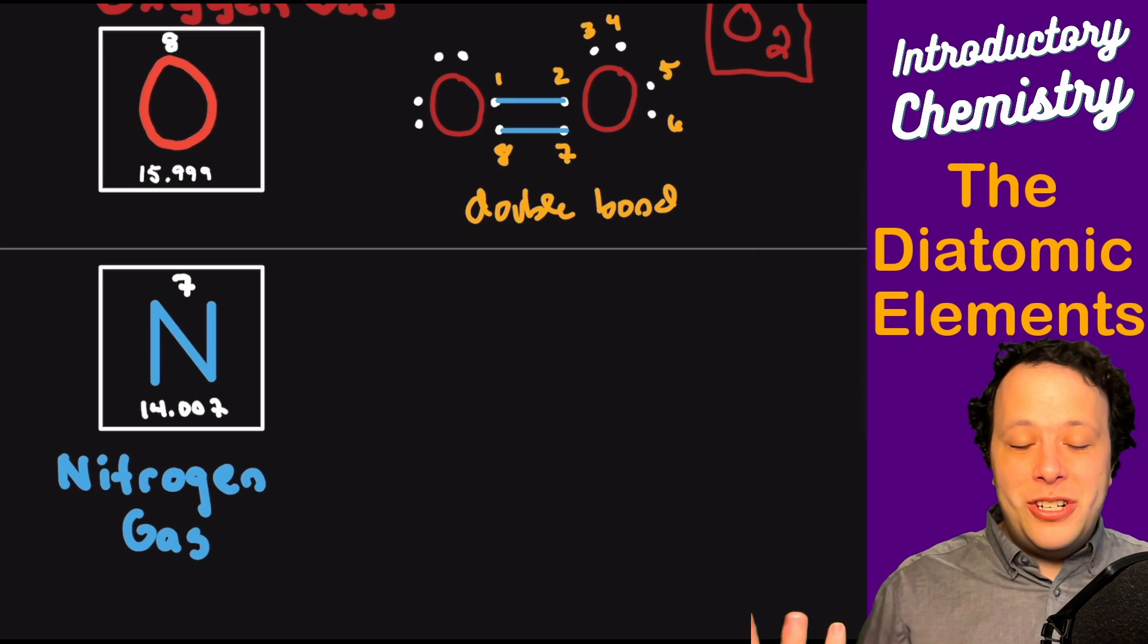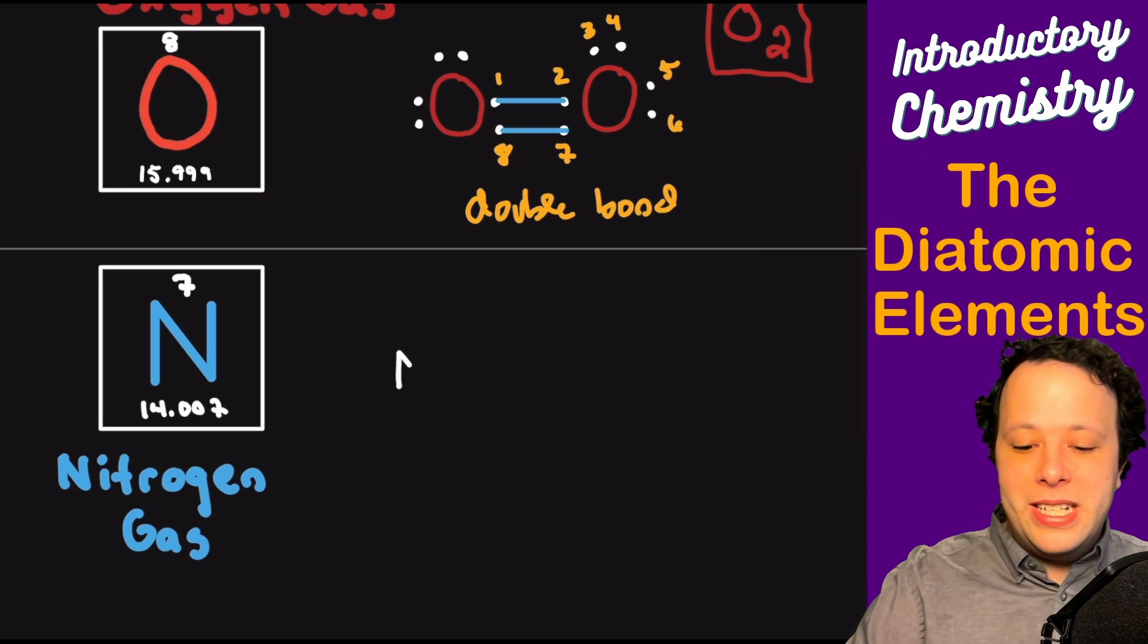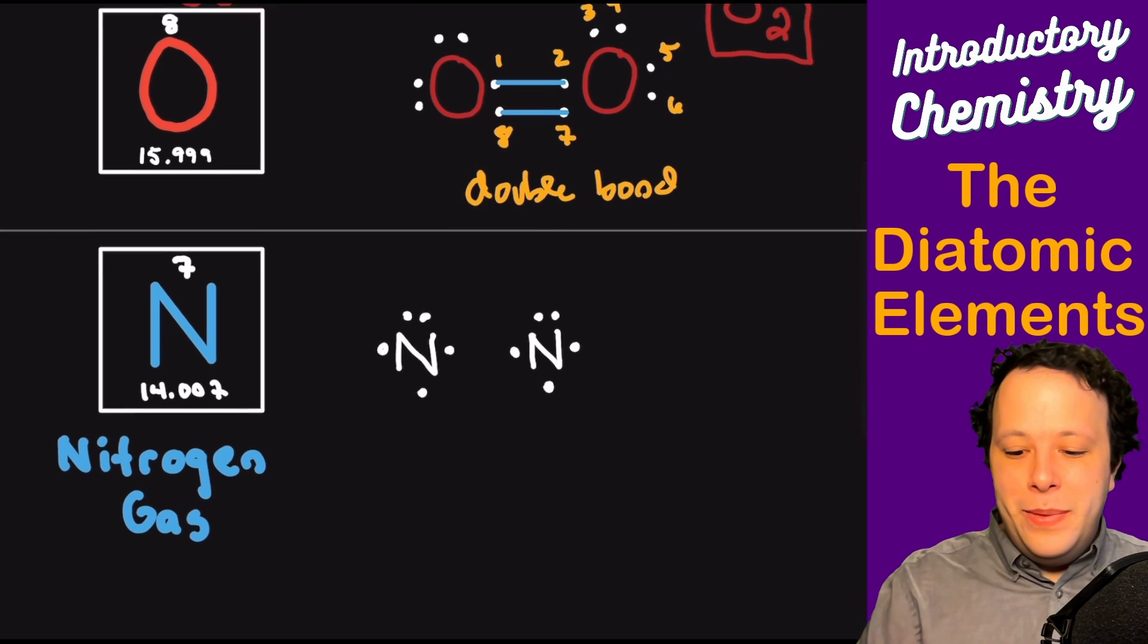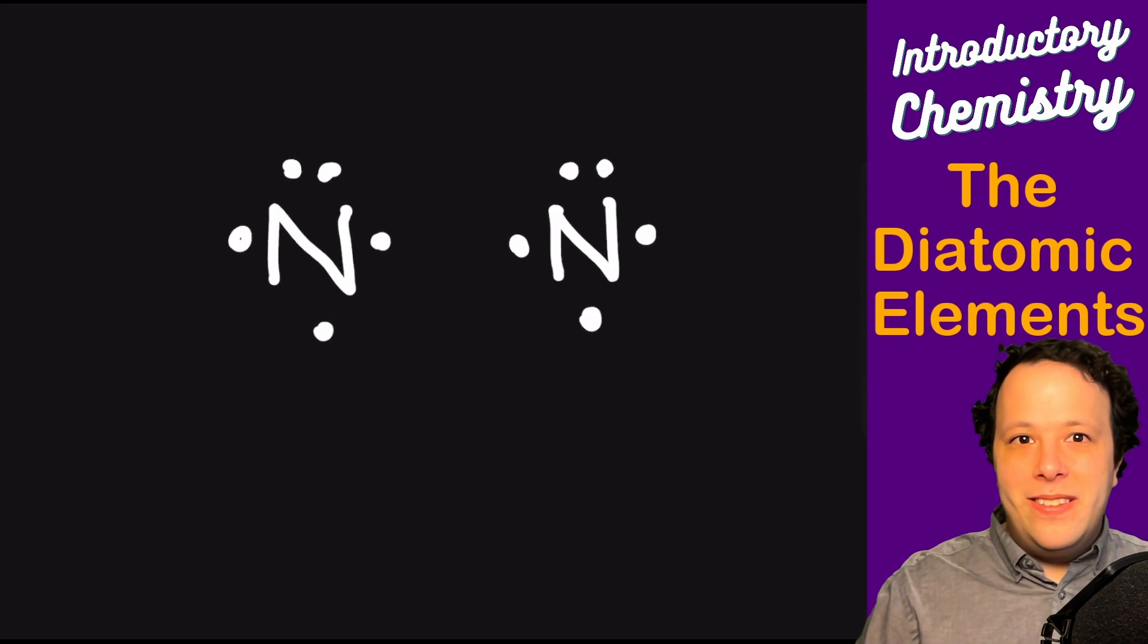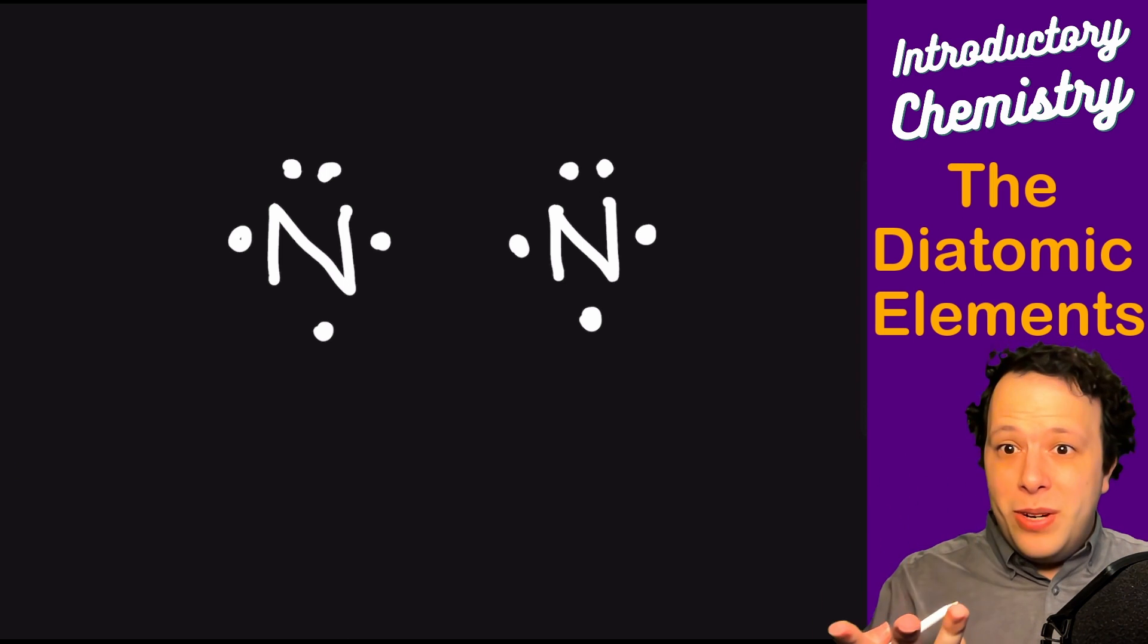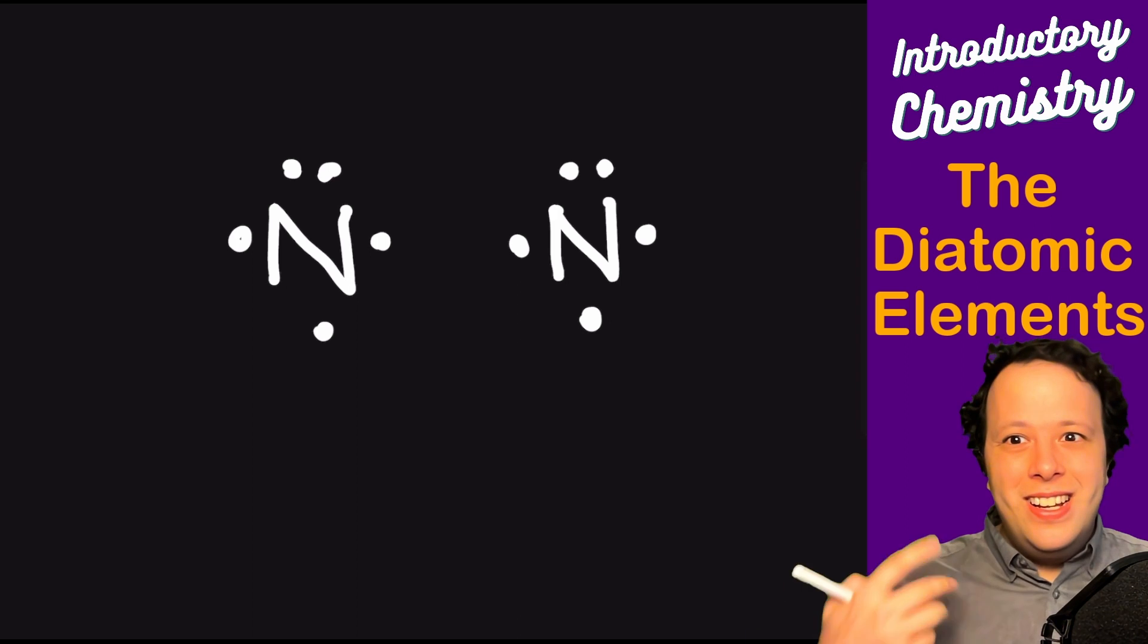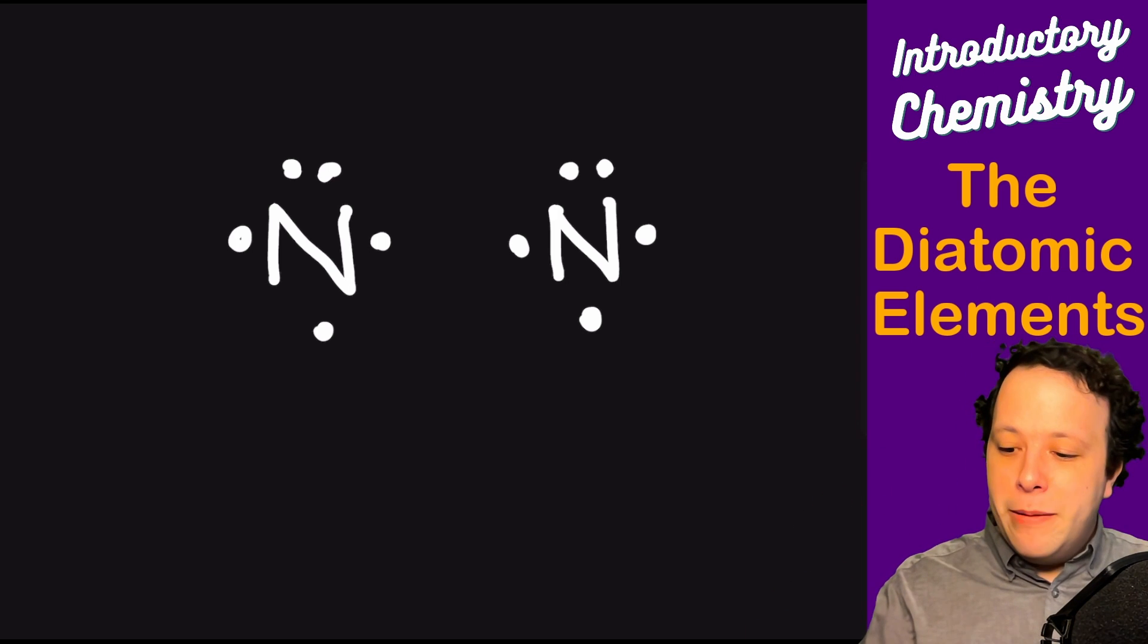Same thing with nitrogen—we live in a nitrogen-based environment. Once again, we're going to write our Lewis structure. We have five valence electrons for nitrogen. We're going to write them all around, and if you notice, well, how many vacant dots do I have around nitrogen? You have three lonely dots.